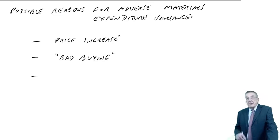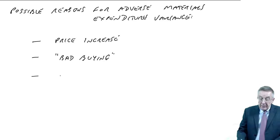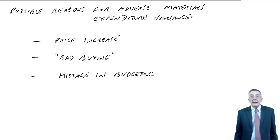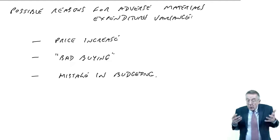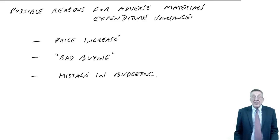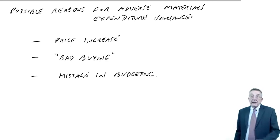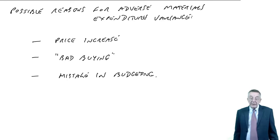This might seem a silly one, but it's possible. It could simply have been a mistake in the budget. People do make mistakes. Maybe the price never was $4.50. Maybe it was a mistake. The price was $4.60 and we should have put $4.60. If we put too low a price in, we're getting the adverse variance, and it's not the purchasing manager's fault.